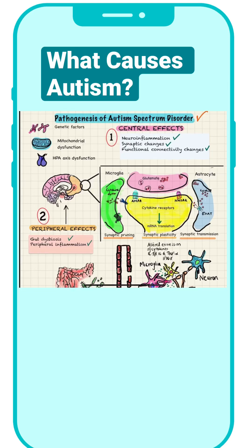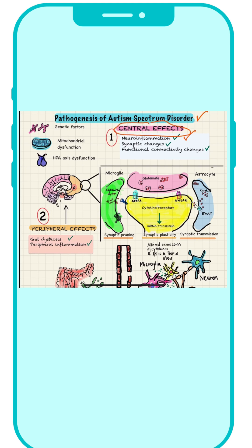When we think about pathogenesis of autism spectrum disorder, it's best to think about it in terms of central effects, which include neuroinflammation due to microglial activation, role of astrocytes, synaptic changes that occur in relation to synaptic pruning, synaptic plasticity,